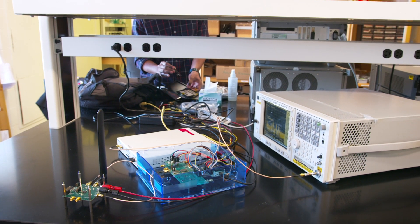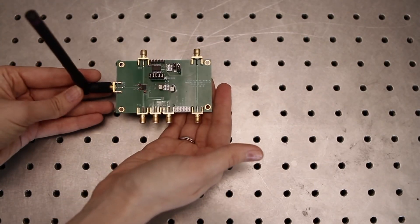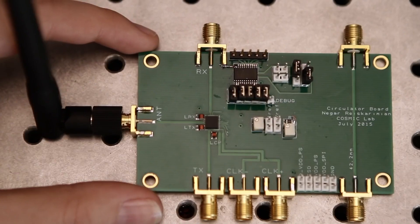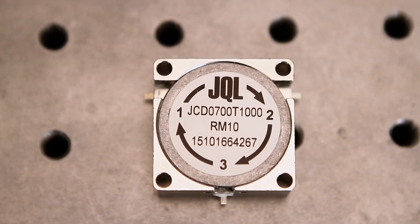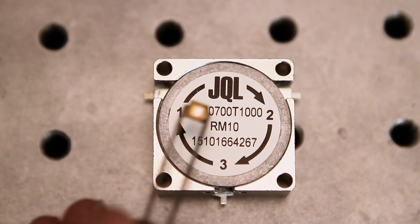Columbia University leads a particular EFRI project called New Law, which is looking to discover new ways of manipulating wave propagation. This could be any kind of wave. This could be a light wave, a sound wave, or radio frequency waves.